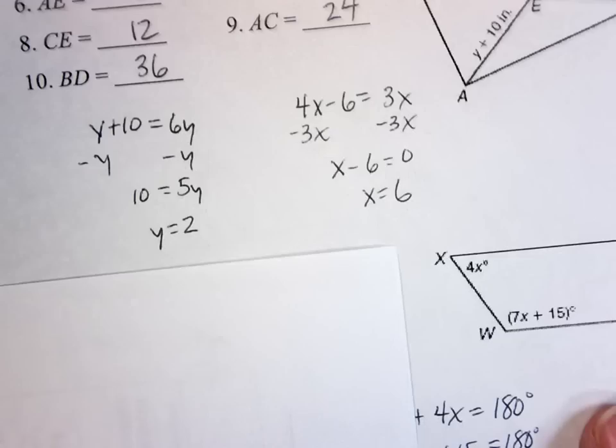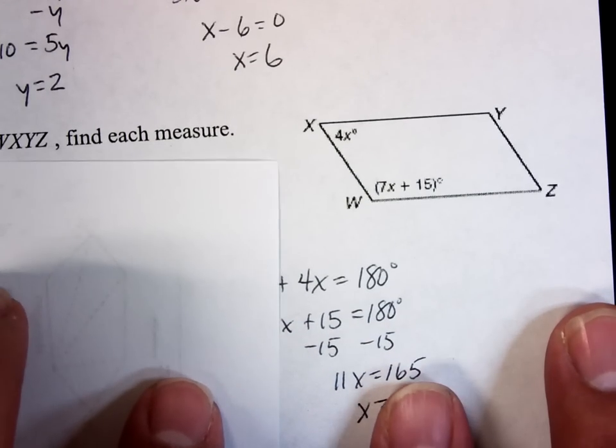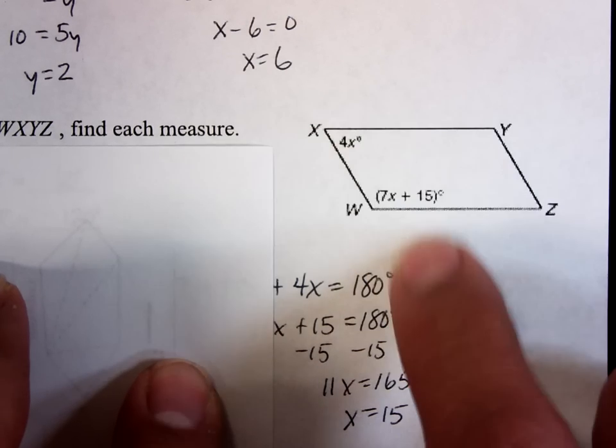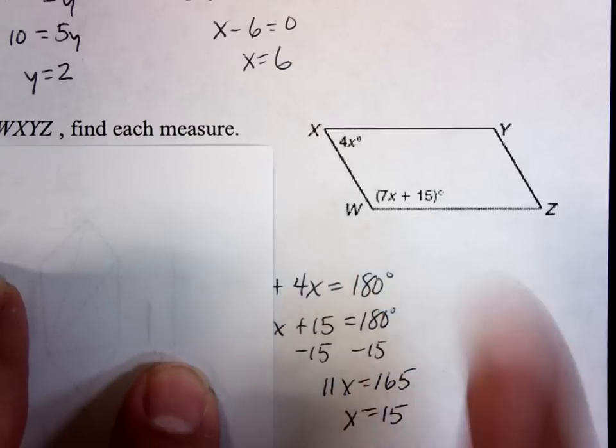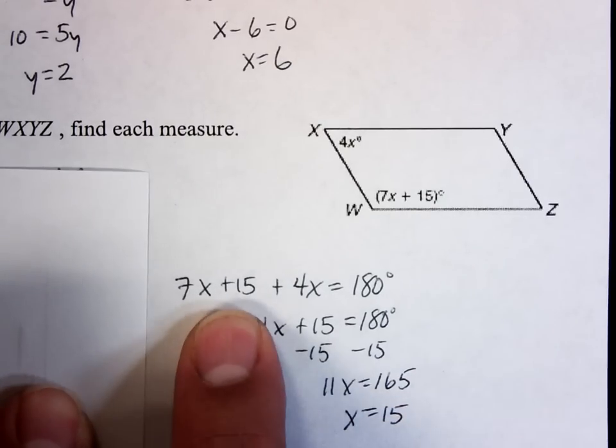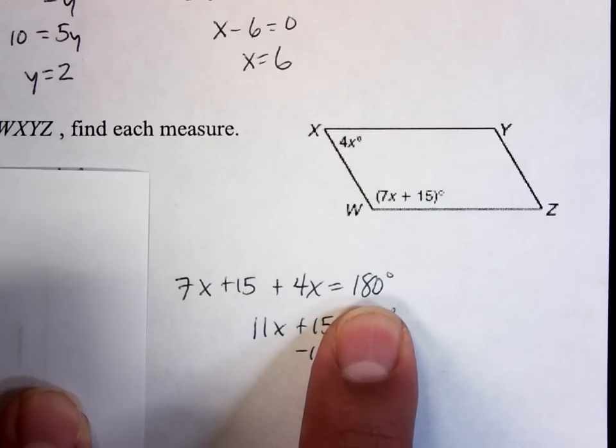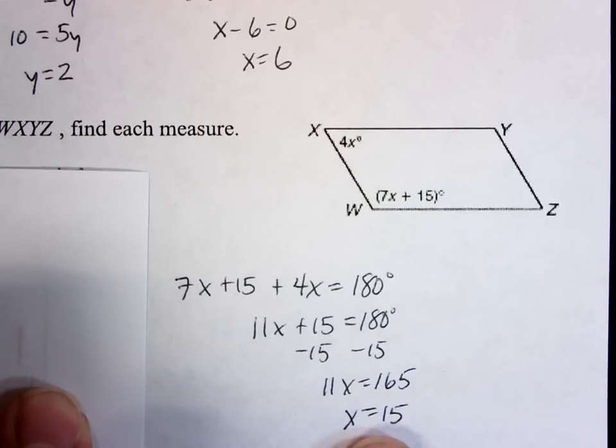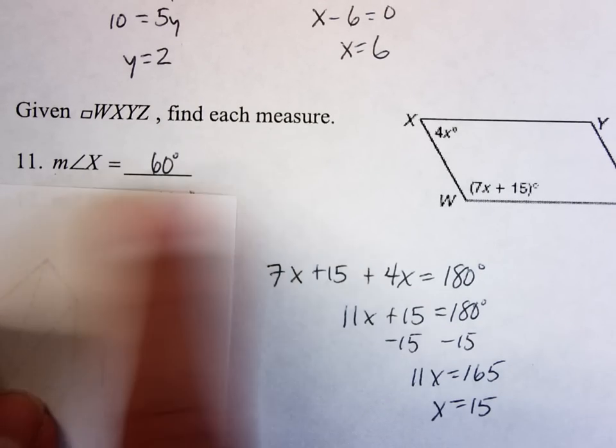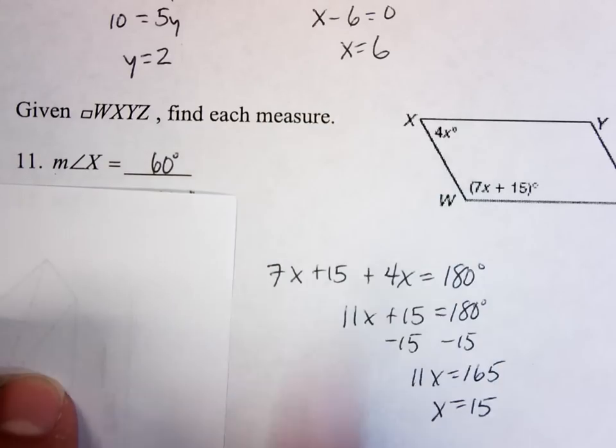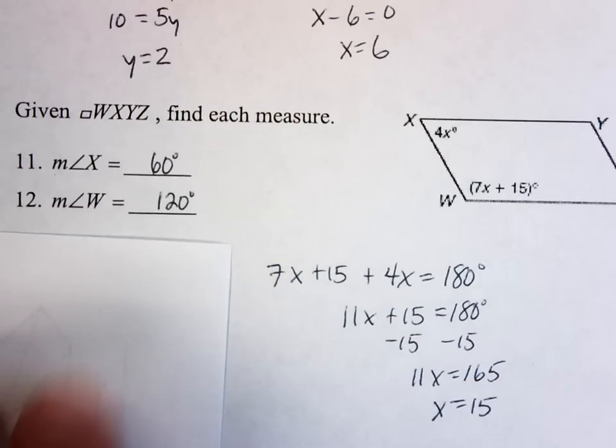Cover up some of my answers. They give me a new parallelogram, WXYZ. They give me a pair of consecutive angles. Remember, consecutive angles must be supplementary. They should add up to 180 degrees. So I should be able to say 7X plus 15, this angle measure, plus 4X, this angle measure, equals 180 degrees. Work it on down, solve for X, X is equal to 15. Once I have X, I plug back in. They want the measure of angle X. Measure of angle X is 4 times X, and we just solved that X is 15. 4 times 15 is 60 degrees. And measure of angle W, 120 degrees.